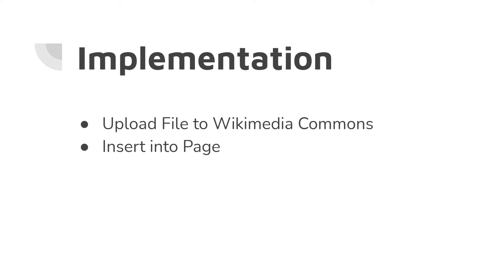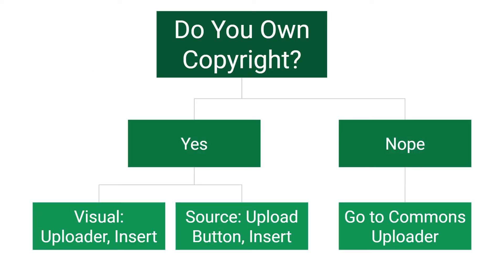To incorporate images, you go through the visual editor or the code editor, select Insert, then Image, and you're off to the races. Usually this directs you to Wikimedia Commons, where you first upload the image and then insert it into the page. If you own the copyright to the image, the editor will open an uploader allowing you to directly upload and insert it. If you don't have the copyright, it will direct you to the Commons uploader.